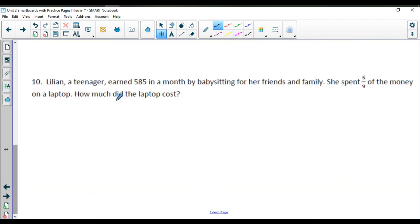Question number 10 here is kind of hiding a little bit. Lillian, a teenager, earned $585 in a month babysitting for her friend's family. She spent five ninths of the money on a laptop. How much did the laptop cost? So we're doing five ninths of 585. So 585 is going to go over 1 here. I am going to do 5 ninths times this. So I am going to take 585 and any common factors here. Looking at the 9 and the 585. So I am going to see if there is a common factor. I can actually see if 9 goes in here.